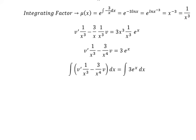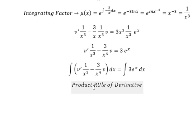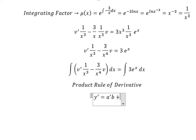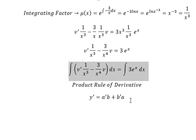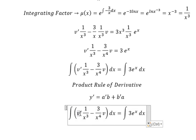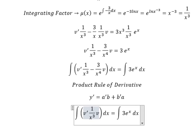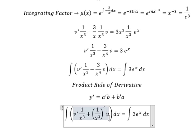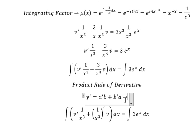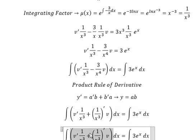Next, we can use the product rule of derivative. So we know that the first derivative of Y equals the first derivative of A multiplied by B, plus the first derivative of B multiplied by A. So if we look carefully at this one, we see that this is about the first derivative of A multiplied by B, and this one is about the first derivative of B multiplied by A. So if we do this integration, we have Y equals AB.